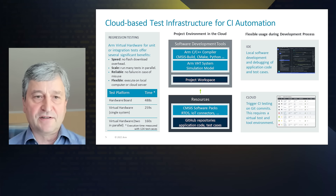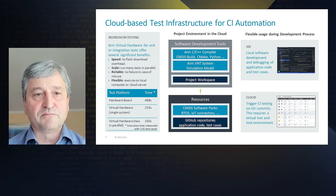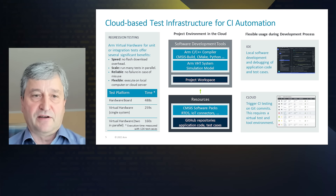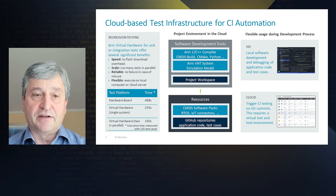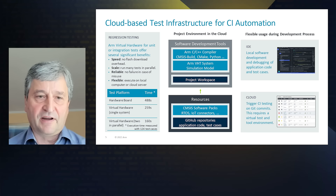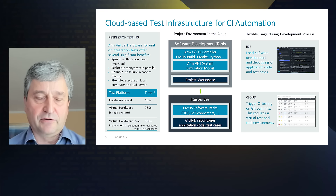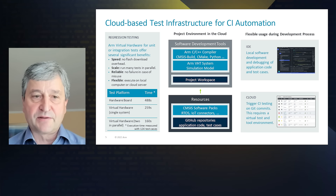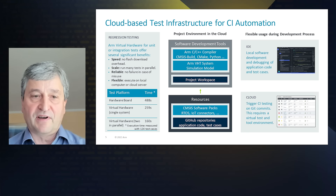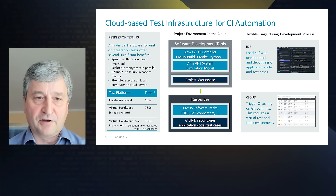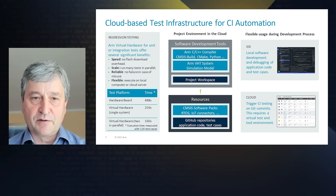Simulation technology has many benefits. We call this Virtual Hardware Targets and it is faster — you don't need flash download, for example. It scales when you bring it into the cloud and you can actually run tests in parallel. It's more reliable because you cannot break simulation models whereas hardware can fail, and it is flexible — you can execute it on a local computer or on a cloud server. You can see here some of the timing benefits you get with virtual hardware targets when you run it on a single system or on two parallel systems.